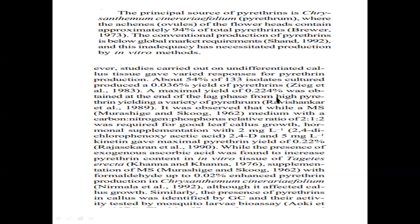Pyrethrin is what you find in mosquito coils. The chief source of pyrethrin is chrysanthemum species. Most chrysanthemum species produce pyrethrin as a secondary metabolite. Much work has been done in Cineraria folium species where ovules were studied for pyrethrin production, and they were found to contain 94% of the total pyrethrin yield.